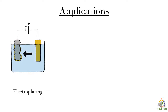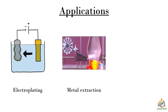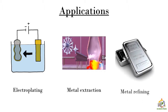There are a few applications of the chemical effect of electric current. The first one is electroplating, which we just saw. The chemical effect is also used in metal extraction processes — in mines where metal needs to be separated from other components, electric current is used to simplify the process. It is also used in metal refining.